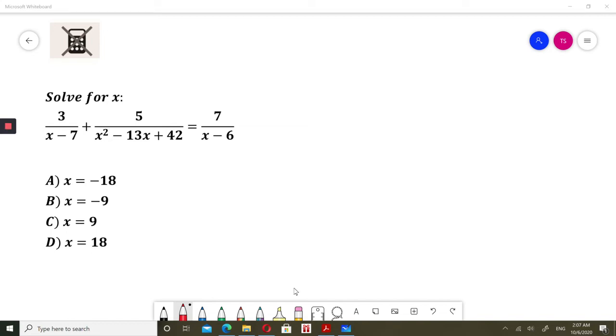Solve for x. 3 divided by x minus 7 plus 5 divided by x squared minus 13x plus 42 equals 7 divided by x minus 6.